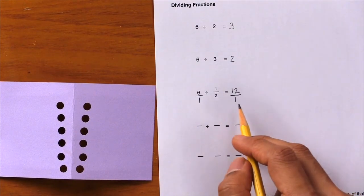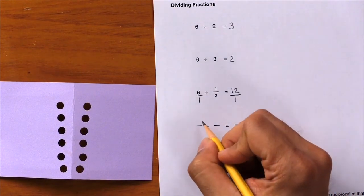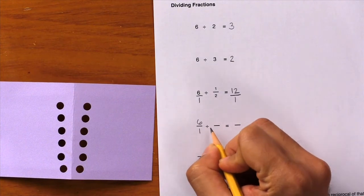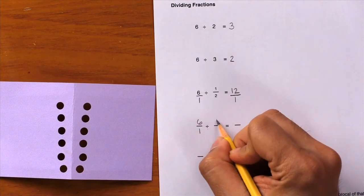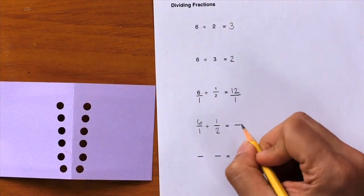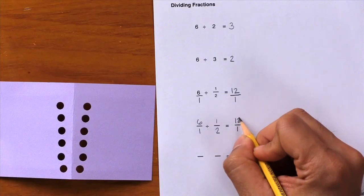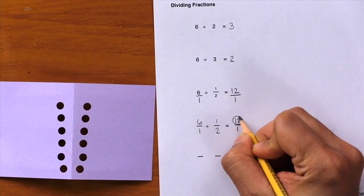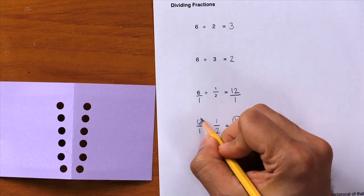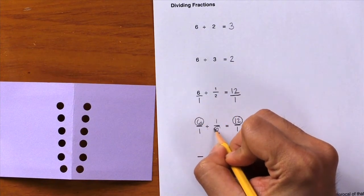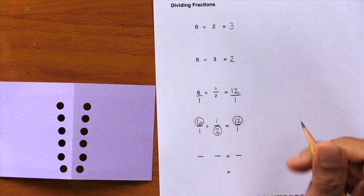It's getting a little messy, so let's rewrite it. Here we have six over one divided by one half equals twelve over one. And now I have students tell me where these numbers are coming from. So where did this twelve come from? And they realize, oh, you can do six times two and that'll give you twelve.